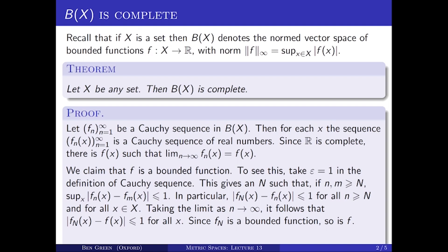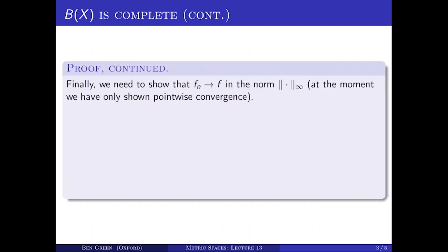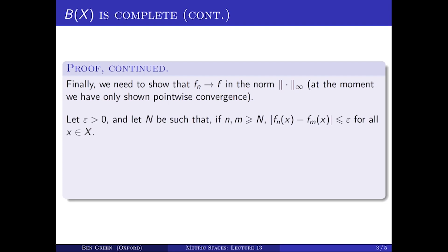I'm not quite finished because I need to show that Fn tends to F in the metric induced from the sup-norm on this space B(X), whereas at the moment I've just shown pointwise convergence. So we need to show that Fn tends to F in the sup-norm. Let epsilon be greater than zero and apply the definition of Cauchy sequence once again. So now there is a capital N such that if little n and little m are greater than or equal to capital N, then uniformly in x, the absolute value of Fn(x) minus Fm(x) is less than or equal to epsilon. That is just what it means for the sequence of functions Fn to be Cauchy in the metric induced from the sup-norm.